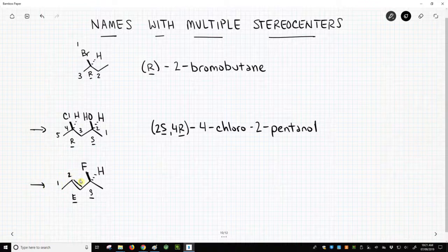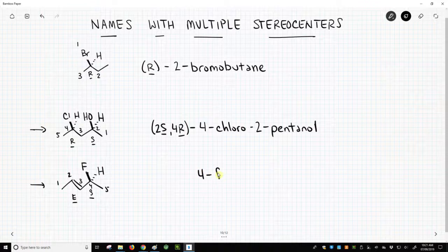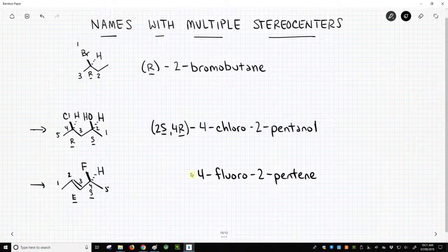We'll number closest to the end with the alkene. This is going to be some kind of pentene, 2-pentene, and we have a 4-fluoro. So 4-fluoro-2-pentene.